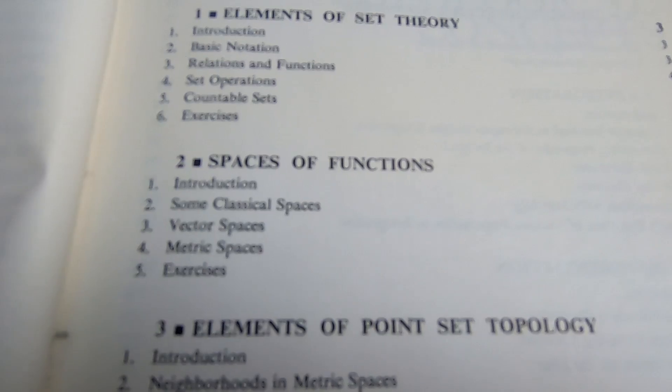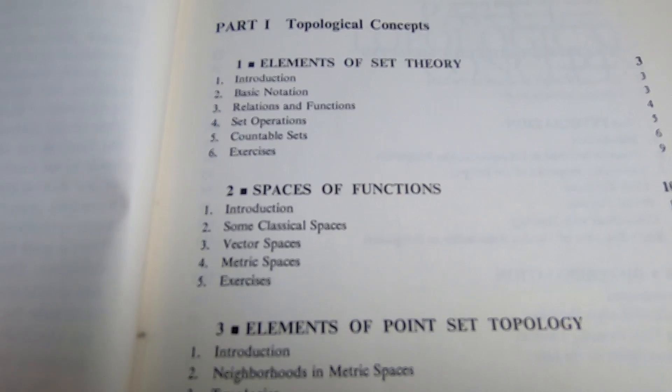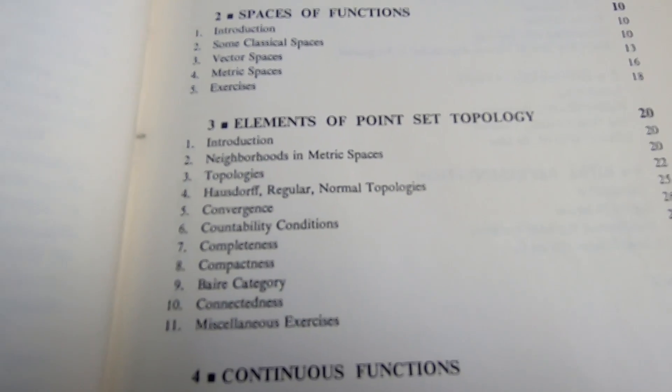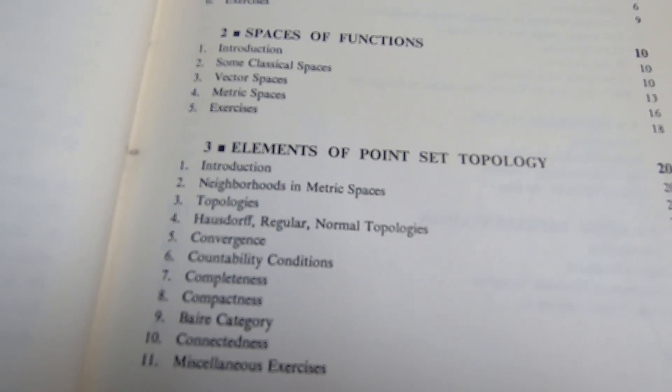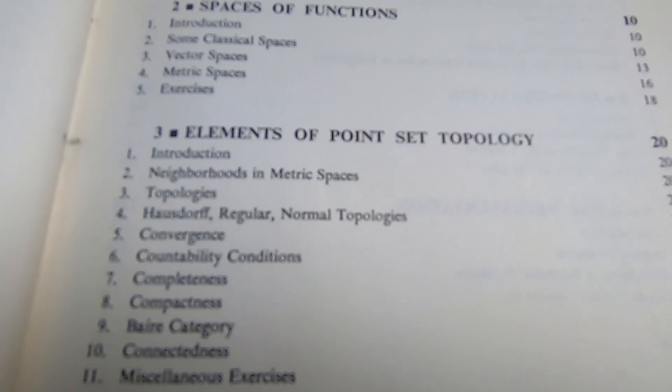Then it goes on to spaces of functions. It talks about vector spaces, metric spaces. These are things you've probably seen if you're reading this book. Then it goes on to talk about topology. It's a really nice review of topology. If you've already had a course in topology and you're reading this, this is a pleasure to read.